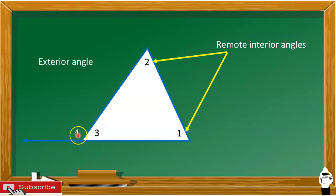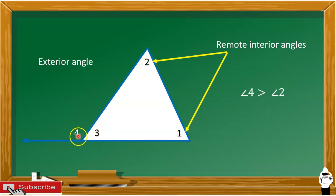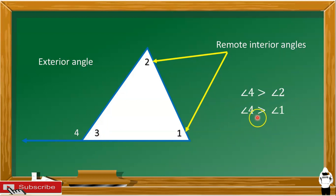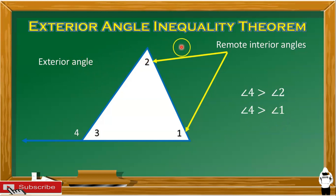The exterior angle is greater than the remote interior angles. It's like angle 4 is greater than angle 2, and angle 4 is greater than angle 1. This idea is all about the exterior angle inequality theorem.